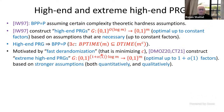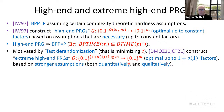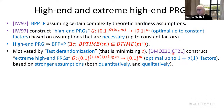Recently, motivated by fast derandomization — trying to get the most efficient simulation possible, minimizing the constant C — two beautiful papers, one by Doron, Moshkovitz, Oh, and Zuckerman, and the other by Chen and Tell (referred to as DMOZ and CT), construct what I'll call extreme high-end pseudo-random generators.